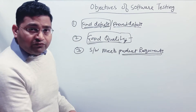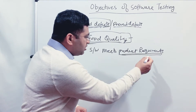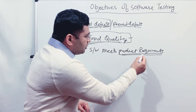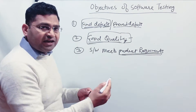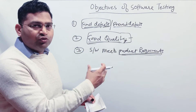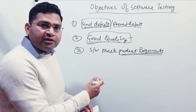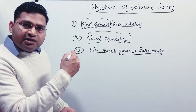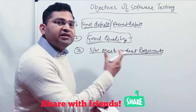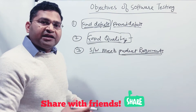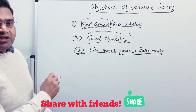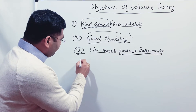So the third objective of software testing is: when your organization is developing that particular product, the software testing team will ensure that whatever requirements the customer has provided are being met in the application. Similar to what I explained with the add-to-cart example in e-commerce — add to cart is one feature or requirement. If that is not working, it is not meeting the product requirement. You raise a defect, the developer fixes it, you retest it, and that's how you ensure the product requirements are being met. That's the third objective.